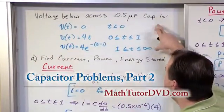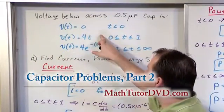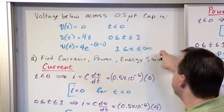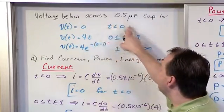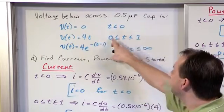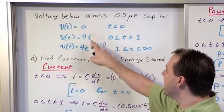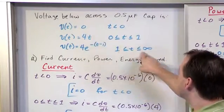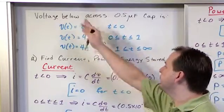So in the previous problem we were given that we knew the voltage profile in three different windows of time. We know the voltage when t is less than zero is zero. We know the voltage between zero and one second is a linear ramp. And we know the voltage after one second off to infinity is an exponential decay.